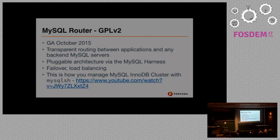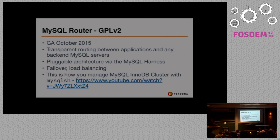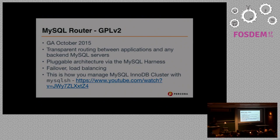MySQL Router is fully GPLv2 — so thank you, Oracle. It became GA in October of 2015, with a labs release about a month before that. The idea is to do transparent routing between all applications and backend MySQL servers. They have a plugin interface via a harness that provides dependency tracking, loading and unloading of plugins, configuration, and a logging framework. It can do failover, load balancing, and distribute application connections in a round-robin fashion, forwarding MySQL packets to a backend server without ever inspecting or modifying them for maximum throughput.